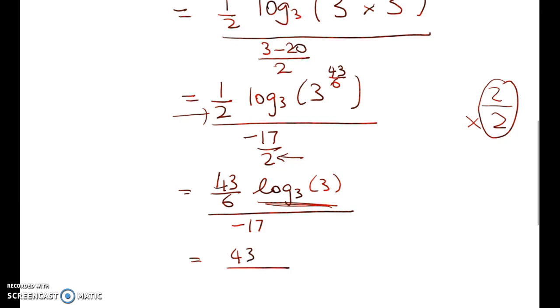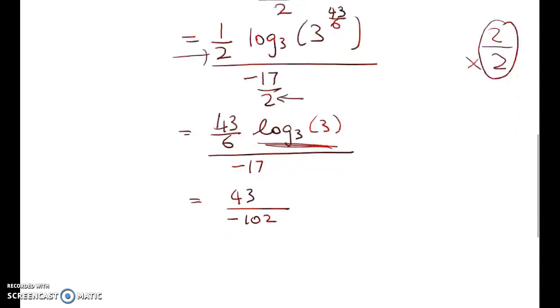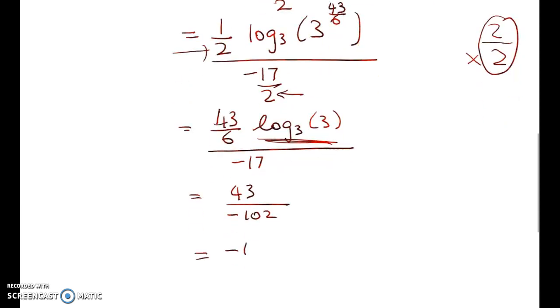Write log to base 3 of 3 is 1, so my final answer is 43 over negative 102, and we write that as negative 43 over 102, right. So a very useless little negative fraction at the end, but that's how it works out.